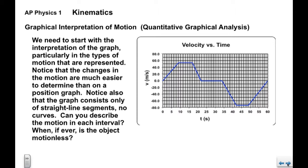We need to begin with the qualitative interpretation of the graph. It's good to know exactly what kinds of motion are represented for each interval. These are much easier to determine than they were on the position graph. You can see very easily when the motion changes — here at 9 seconds, 17 seconds, and 22 seconds. If you want to pause and identify each type of motion, now would be a good time.